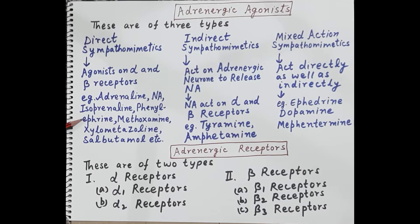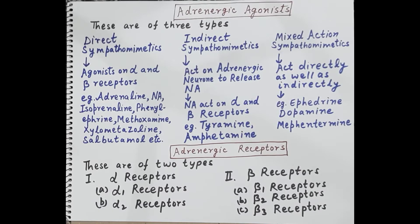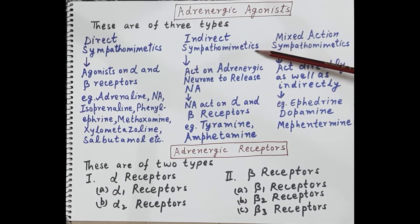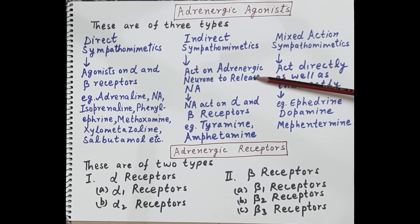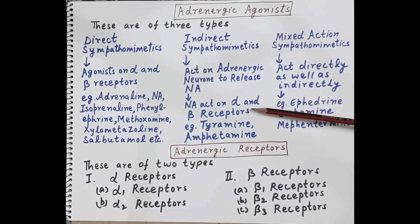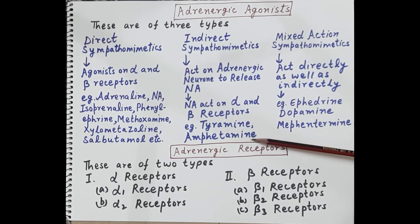Other examples of direct sympathomimetics include phenylephrine, methoxamine, xylometazoline, and salbutamol. The second category of adrenergic agonists are indirect sympathomimetics. These drugs act upon adrenergic neurons and stimulate them to release noradrenaline. The released noradrenaline then binds to alpha and beta receptors to produce the action. Examples are tyramine and amphetamine.